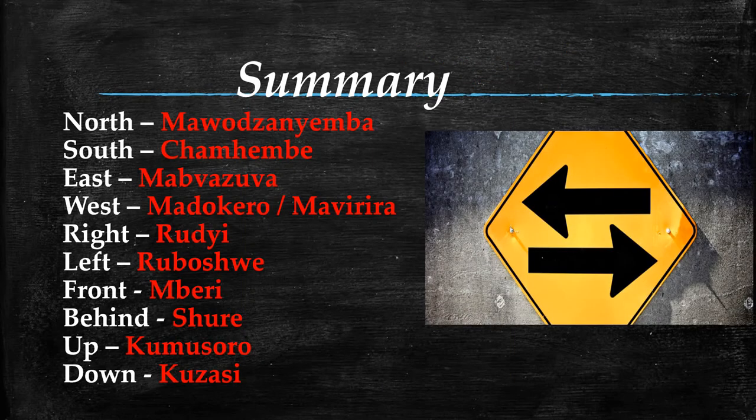Here's the summary. North is Mawodza Nyemba. South is Chamembe. East is Mabazuwa. West is Madokero or Mavirira. Right is Rujgi. Left is Ruboshkwe. Front is Mberi. Behind is Shure. Up is Kumusoro. Down is Kuzasi.